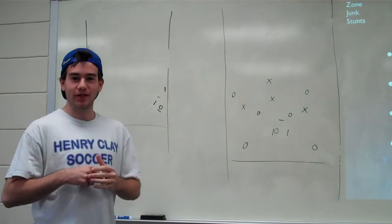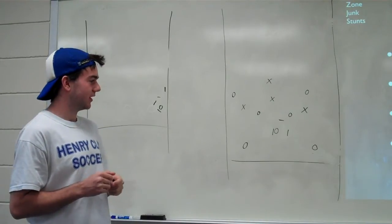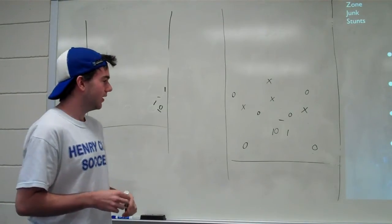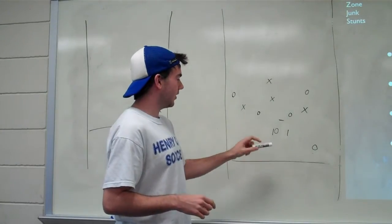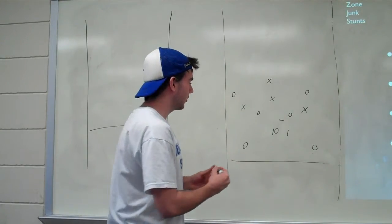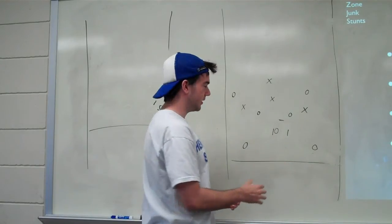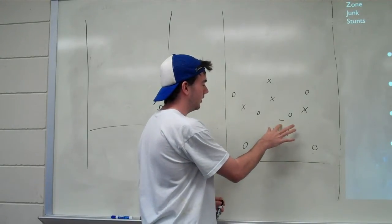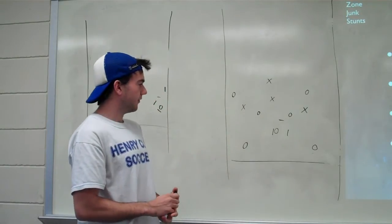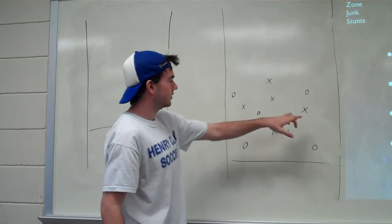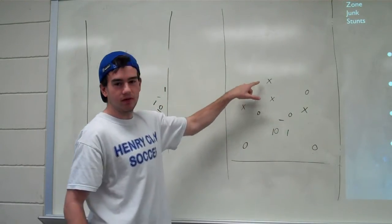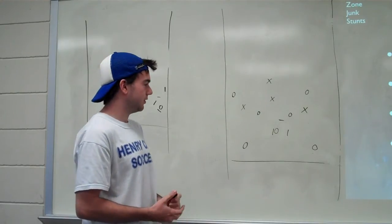I will be talking about zone defense today and more specifically a 3-2-2 zone. As you can see here, the three is from three people in the cup, so they form a triangle shape basically. We have one person cutting off the swing and then another cutting off upfield throws, and then we have two wings, a short deep, and a long deep. That's the 3-2-2 style.